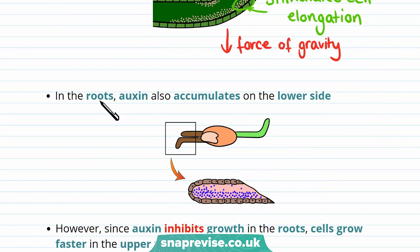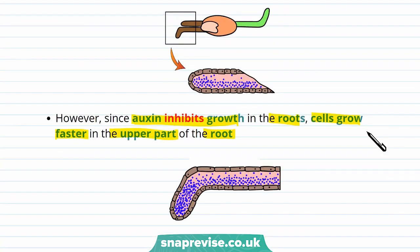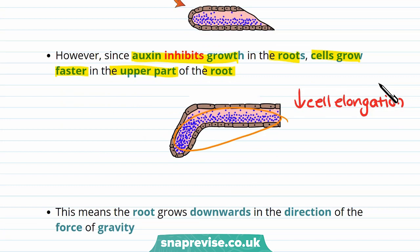In the roots, auxin also accumulates on the lower side. But as mentioned, auxin inhibits growth in the roots, so cells grow faster in the upper part of the root. There's lots of auxin in the lower part of the root, which inhibits cell elongation there, meaning the root grows downwards in the direction of the force of gravity.